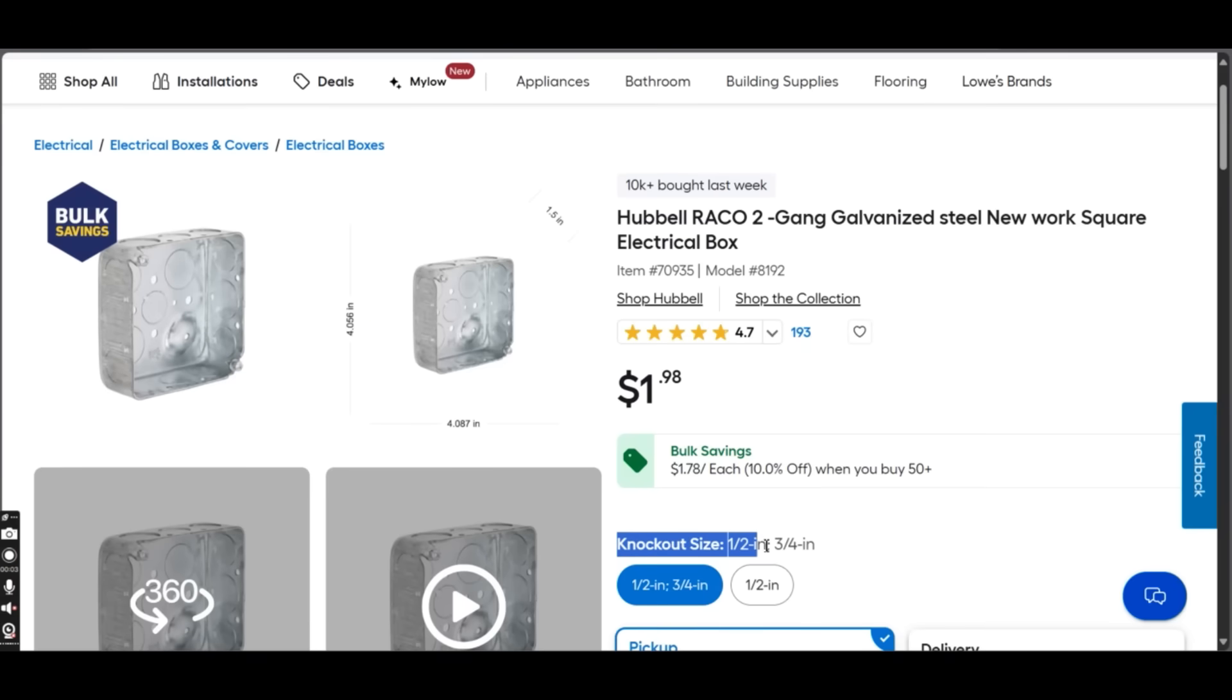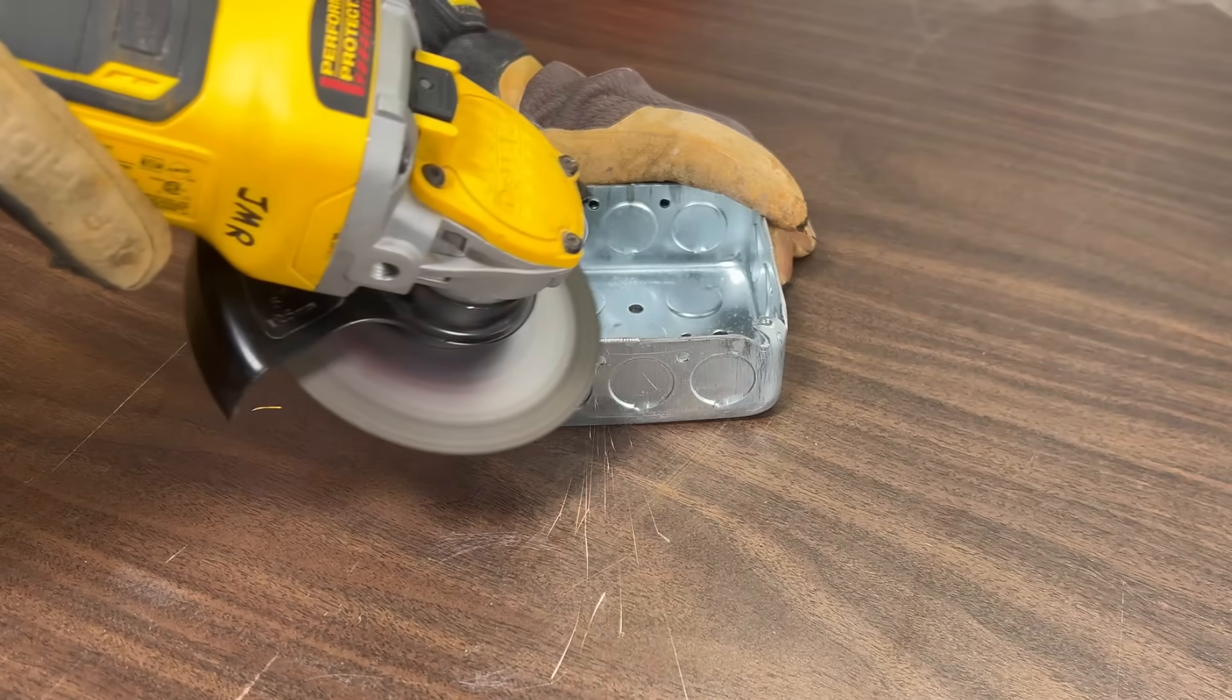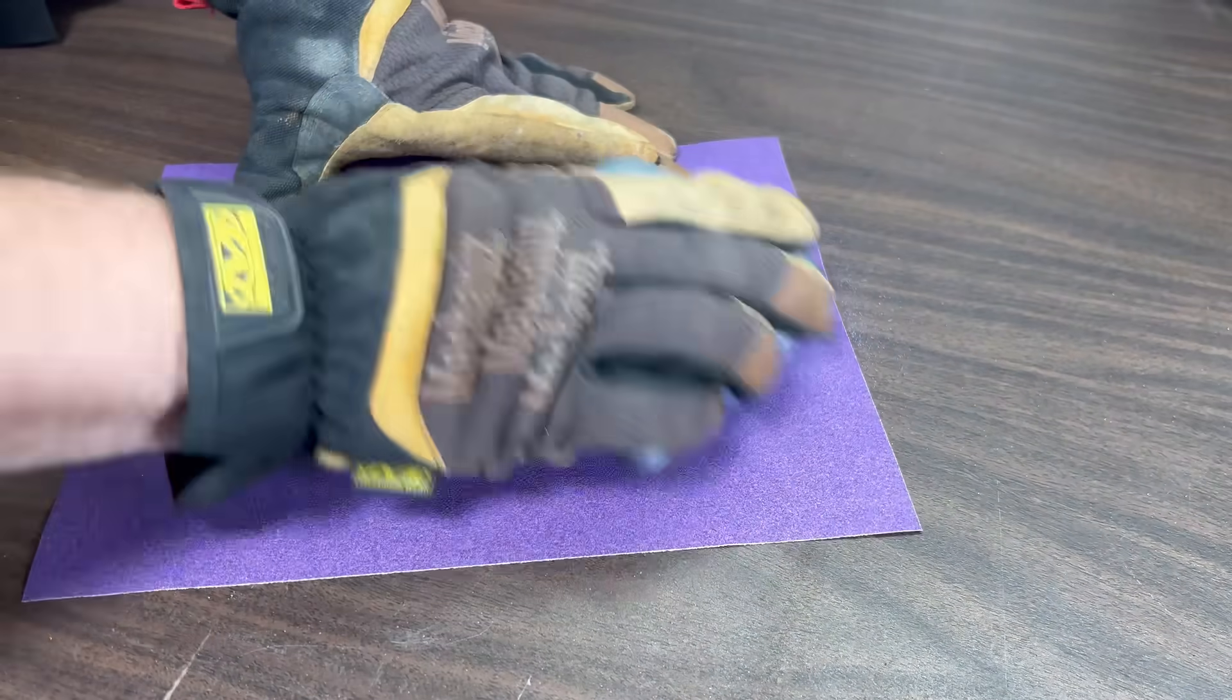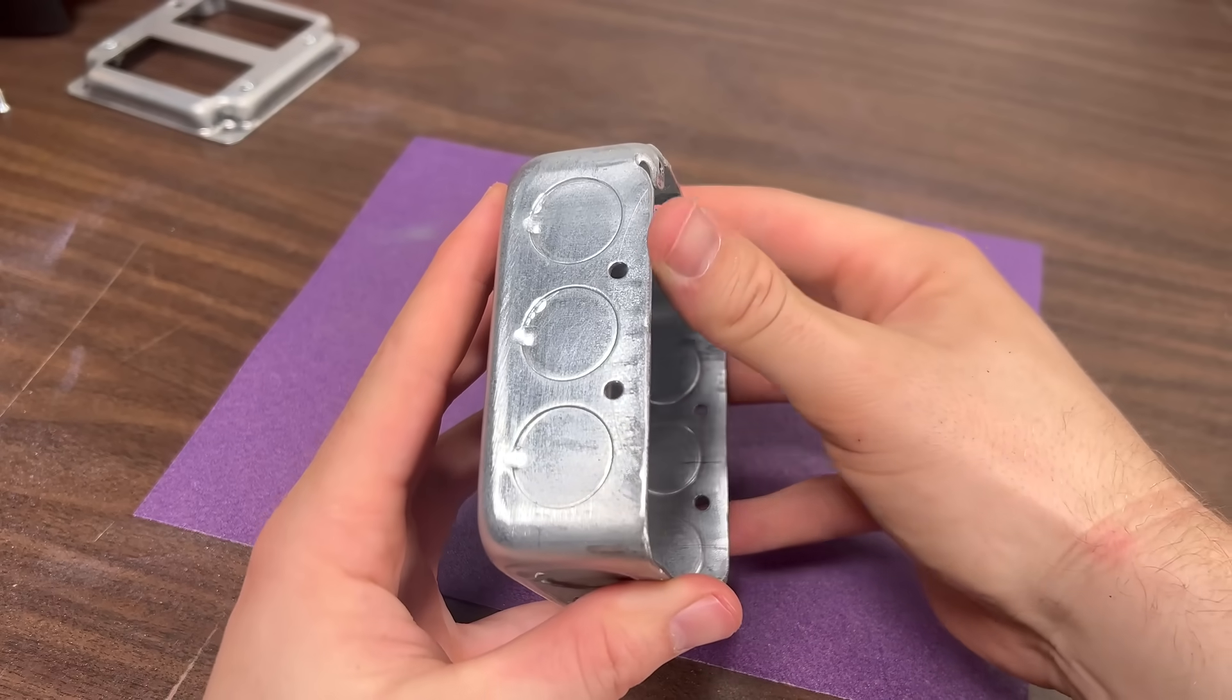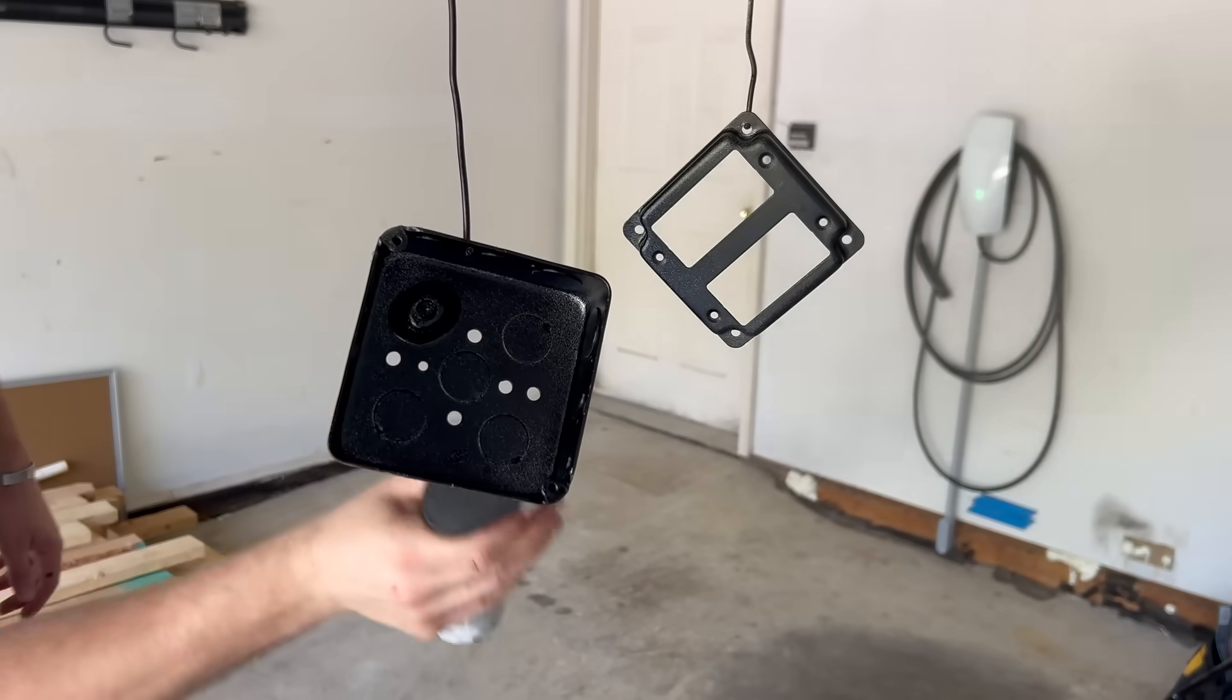To start things off, we have a two gang galvanized steel electrical box with half inch knockouts. You may find that your box needs a little TLC, so don't be afraid to hit it with a grinder and some 120 grit to make those sharp edges nice and smooth. Your OCD will thank you. If you'd like to paint your box, now would be the time.